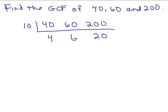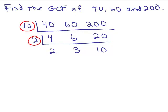Now I have smaller numbers to deal with. What number goes into all three of 4, 6, and 20? Since they're even, I'll divide by 2. 2 goes into 4 twice, 2 goes into 6 three times, and 2 goes into 20 ten times. There is no number that goes into 2, 3, and 10. If you have two consecutive numbers like 2 and 3 or 5 and 6, there's no number that goes into all of those except 1. So we're done. We multiply those on the outside: 10 times 2 is 20. The answer is 20.